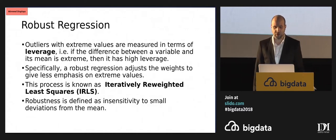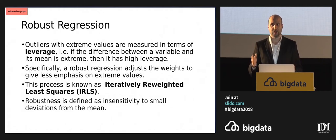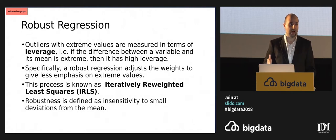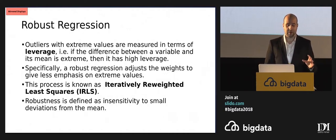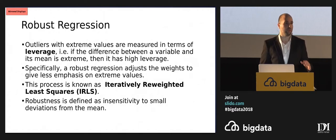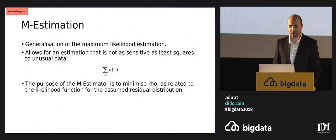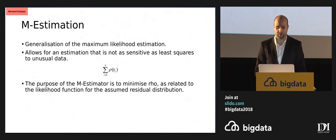What we want to do is run a robust regression. Outliers with extreme values are measured in terms of leverage: if there is a high distance between a predictor and the actual value, it has high leverage; if the distance is small, it has low leverage. We adjust weights to give less emphasis to extreme values using a process known as iteratively reweighted least squares. A robust regression is insensitive to small deviations from the mean while not being overly sensitive to large deviations. Specifically, we use what's called M-estimation, minimizing rho, which is related to the likelihood function for the residual distribution.